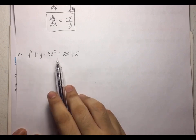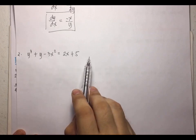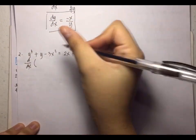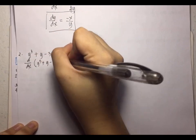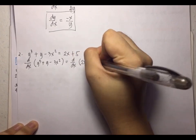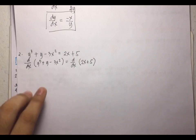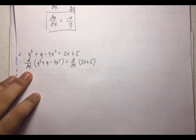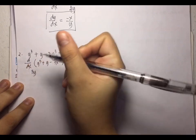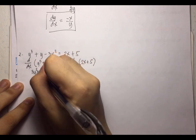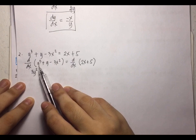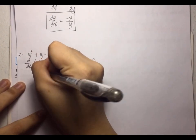Let's do another example: y³ + y - 3x² = 2x + 5. First, differentiate both sides: d/dx(y³ + y - 3x²) = d/dx(2x + 5). Then take the derivative of each term. The derivative of y³, applying the power rule, is 3y². Since we're taking the derivative of y, we must multiply it by dy/dx.